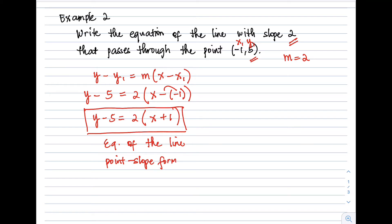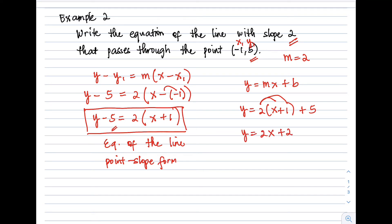If we want to rewrite it in slope-intercept form y = mx + b, we need to isolate y on the left side. Move negative 5 to the right side: y = 2(x + 1) + 5. Distribute the 2: y = 2x + 2 + 5. Combining like terms gives y = 2x + 7.